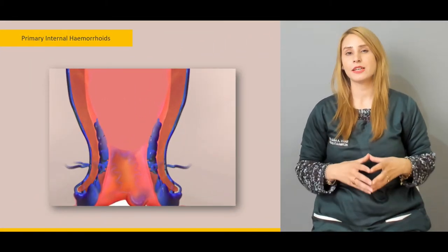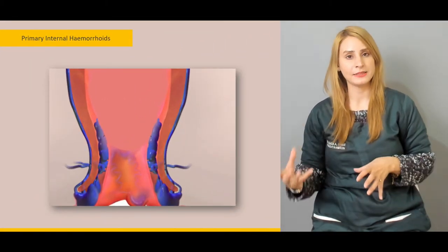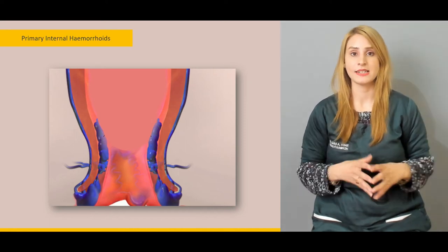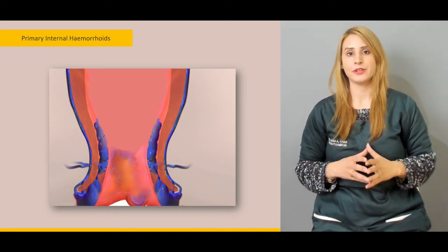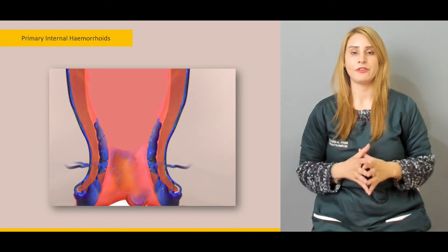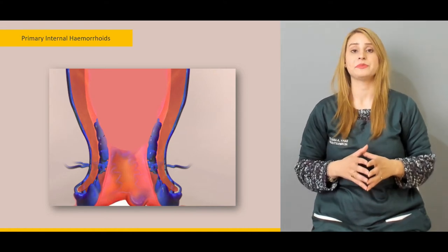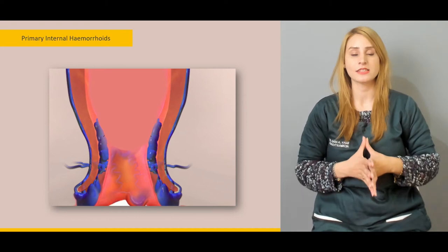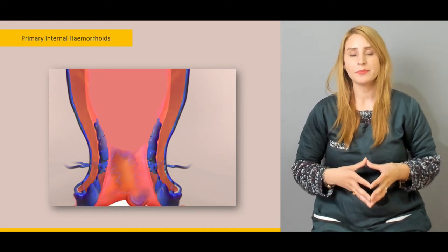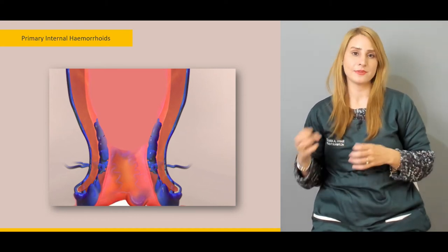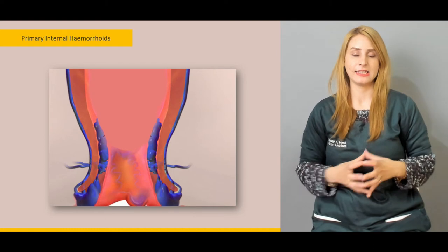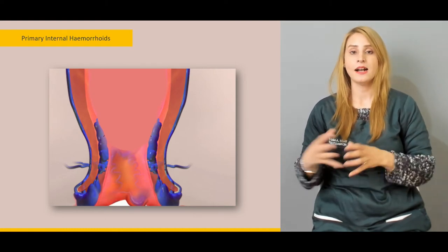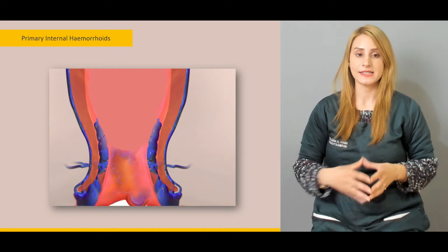Most importantly, we'll be talking about the portosystemic anastomosis which are present, like the superior rectal and the inferior rectal veins. And we'll be talking about the effect of the portal hypertension and varicosities. We'll be talking about the difference between the hemorrhoids and the dilated portosystemic varices.